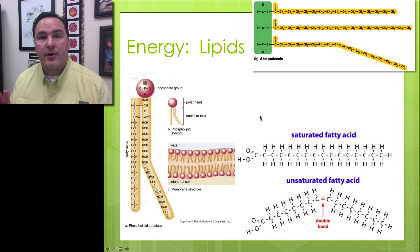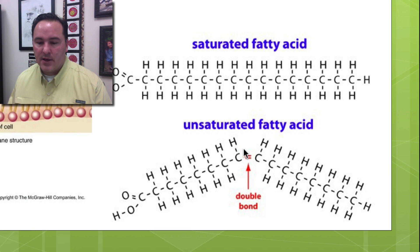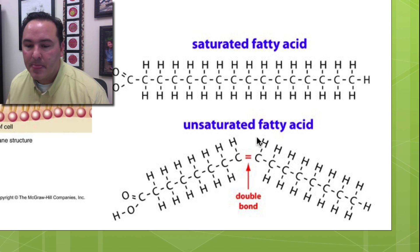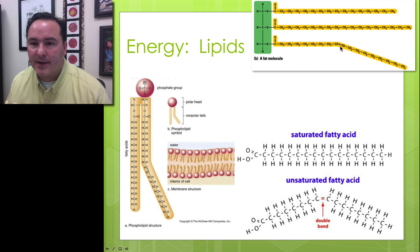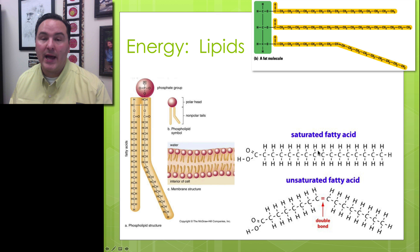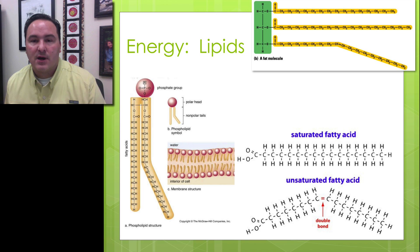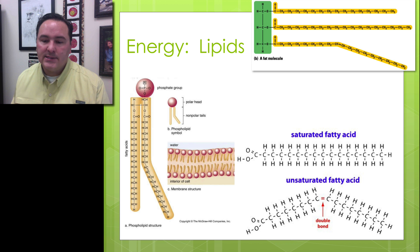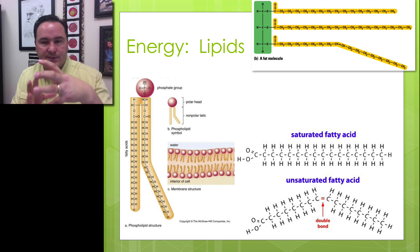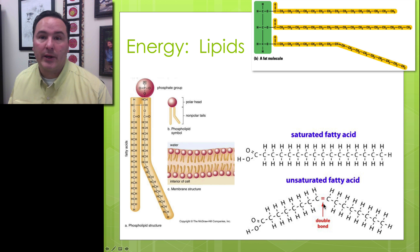Fatty acids can be either saturated or unsaturated. In an unsaturated fatty acid, there is a double bond between two carbons instead of a single covalent bond, causing a bent, kinked chain. Saturated fats can stack tightly on each other and are solid at room temperature, whereas unsaturated fats — like vegetable oil — are liquid at room temperature because the kinks spread the molecules apart.